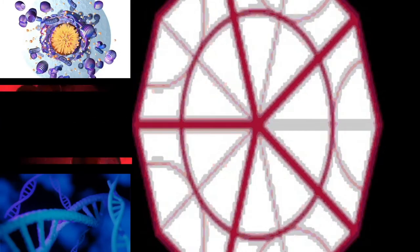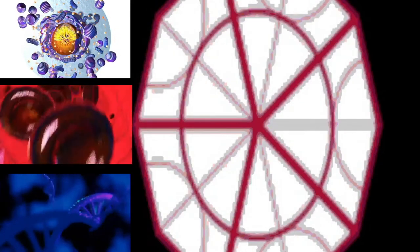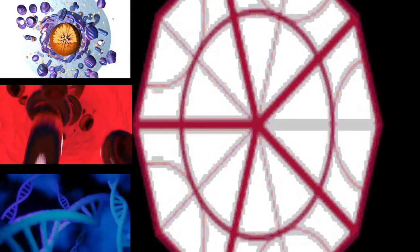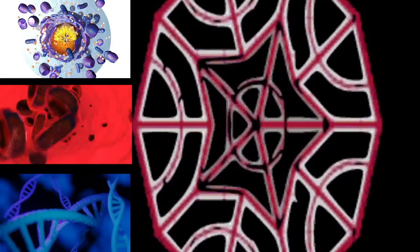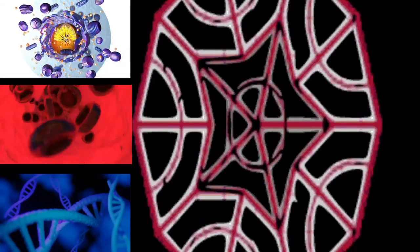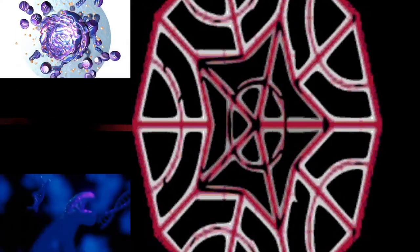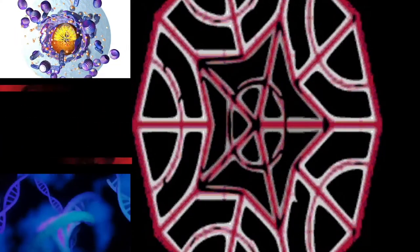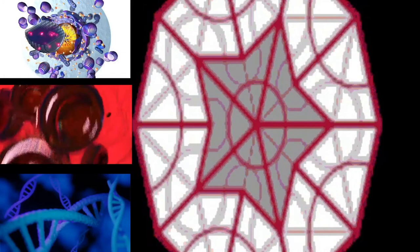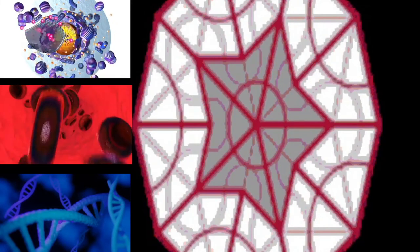The last common ancestor of all eukaryotes is believed to have been a phagotrophic protist with a nucleus, at least one centriole and cilium, facultatively aerobic mitochondria, sex, meiosis and syngamy, a dormant cyst with a cell wall of chitin and/or cellulose, and peroxisomes.